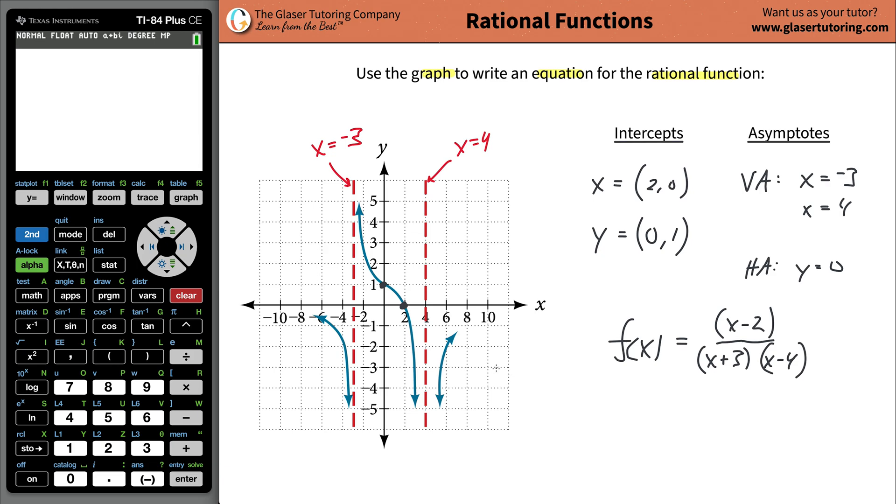Before we move on, there's one thing I want to mention about the vertical asymptotes. Notice here at x equals 4, they both approach negative infinity. Whereas at the vertical asymptote of negative 3, one approaches negative infinity and the other approaches positive infinity. Whenever you have them approaching in opposite directions like you have here, which is normally the case, you have an odd power to your factor, or in other words, an odd degree polynomial.